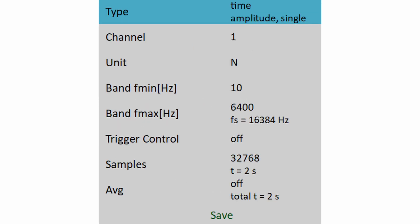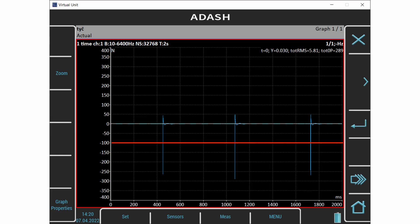The best way is to measure the time signal with several hits and find out the value. I select the time signal measurement with frequency range 6400 Hz and 2 seconds signal length. Now I push start and I hit the beam several times. This is the time signal. I can see that minus 100 N is suitable level.